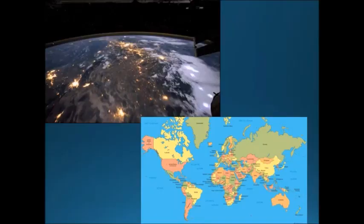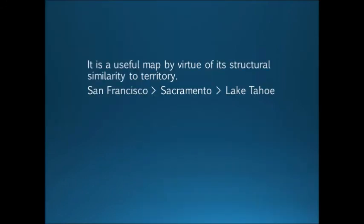Just imagine a map that contained every single detail of the territory it was mapping. If it contained every detail, it would have to be the same size as the territory — you'd have to walk around the map to navigate it. A map can't contain everything; it limits and abstracts. It doesn't show all the grains of sand, the dirt, the animals — there's an infinite amount of things it doesn't address. But what it does address are certain structural features of the land, making it useful by virtue of its structural similarity.